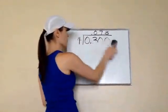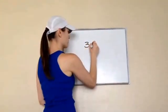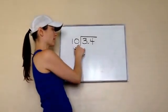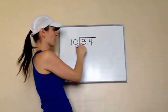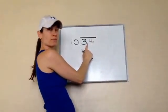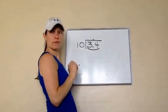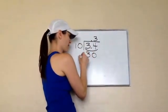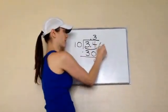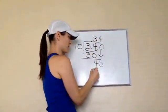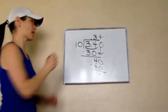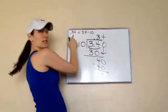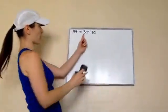Let's do one more: three point four divided by ten. How many times will ten go into three? No. Will it go into 34? Yes. Bring the decimal up. Ten goes into 34 three times — three times ten is thirty. Then add a zero and bring it down to get forty. Four times ten is forty — we're done. The answer is point three four. So three point four divided by ten equals zero point three four.